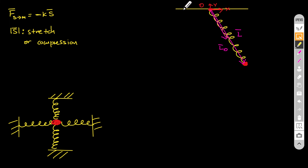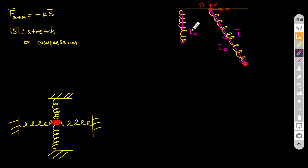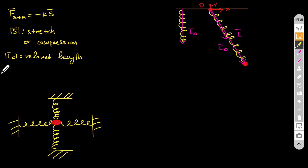If there was no mass on the spring, the spring would be at its relaxed position, and l0 would go from the origin to the end of the relaxed spring. The magnitude of l0 gives the relaxed length of the spring, while the magnitude of l gives the length of the spring at that moment. Those two don't have to be the same — if I'm stretching the spring, the magnitude of l is greater than the magnitude of l0.